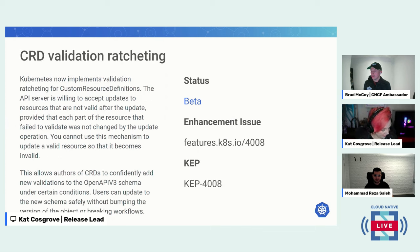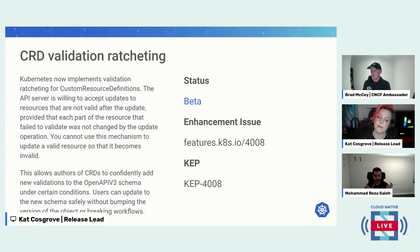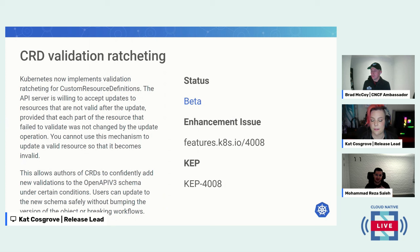The next beta is validation ratcheting for custom resource definitions. Generally, CRD authors increment versions when adjusting the field layout, but doing so when only modifying value validation is more trouble than it's worth. This enhancement enables CRD authors to confidently add new validation and update the schema without breaking existing work.